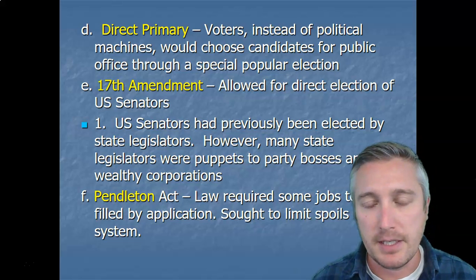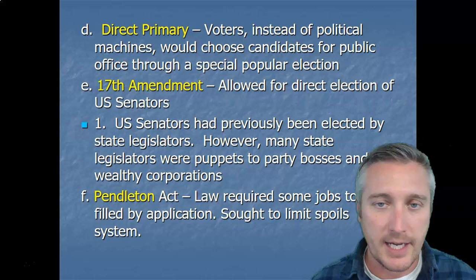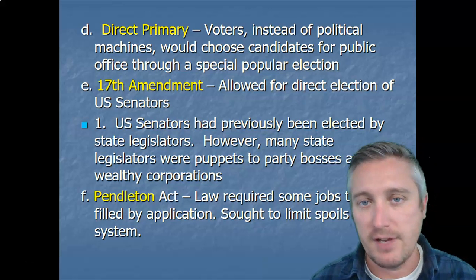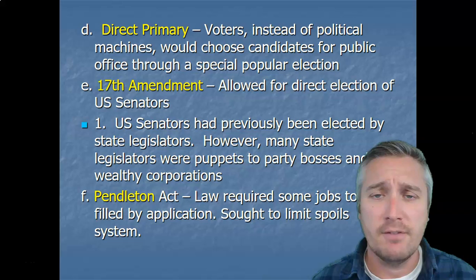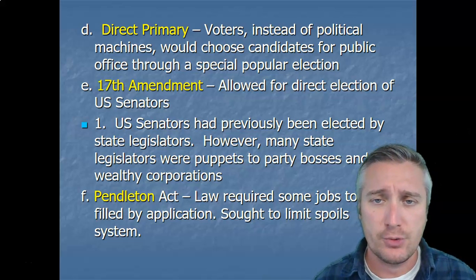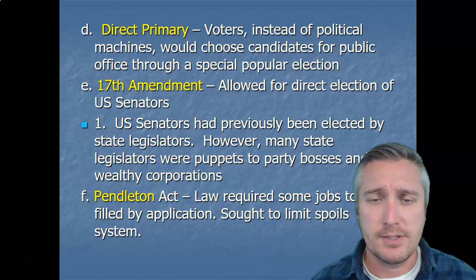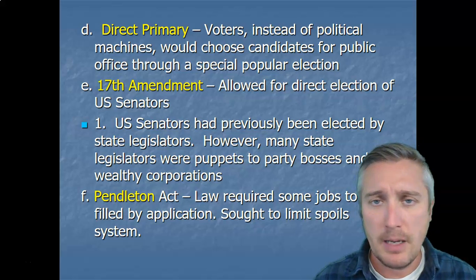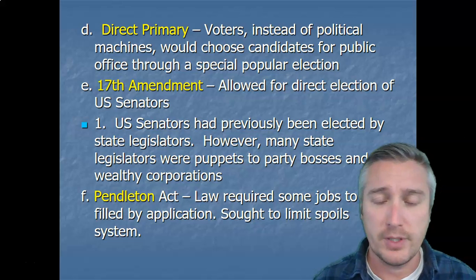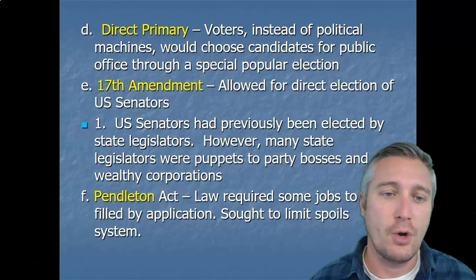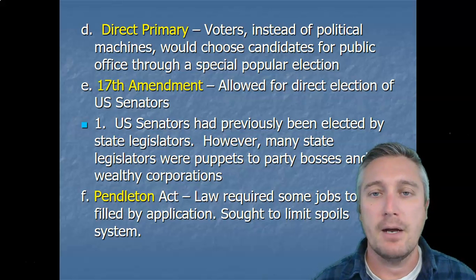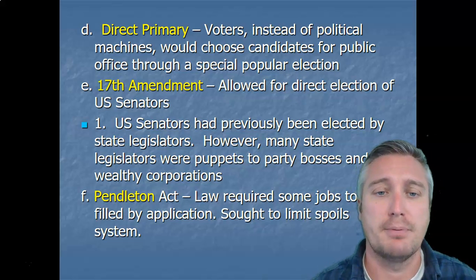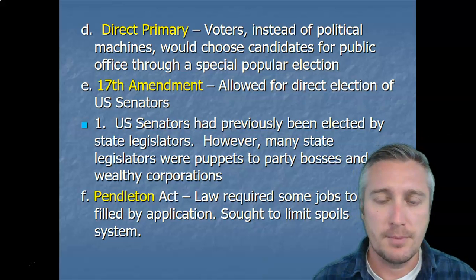The 17th Amendment is a very important amendment. Before it, the election of U.S. Senators was actually handled by the state government — the state legislature would vote on who would become the U.S. Senator. The problem is if you have a corrupt state government, you're eventually going to have a corrupt federal government. So this amendment was an attempt to eliminate the power of political machines even on a national level by directly electing those who represent us in the Senate. The 17th Amendment was a great step for our country to eliminate corruption.